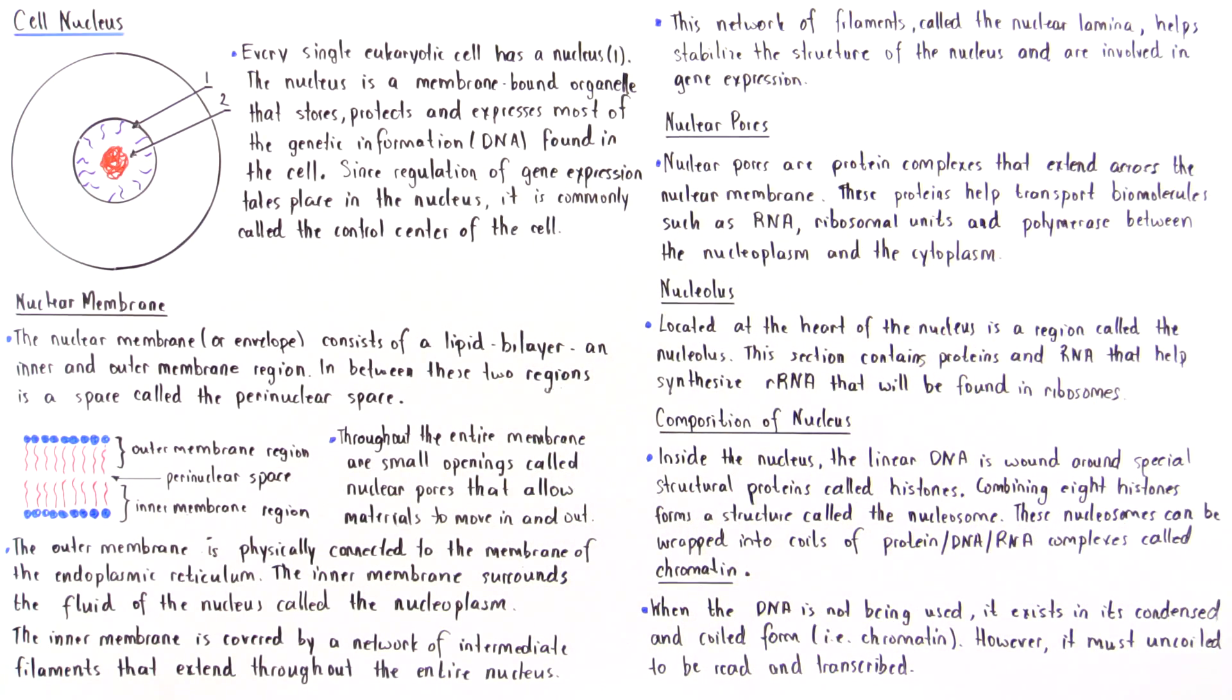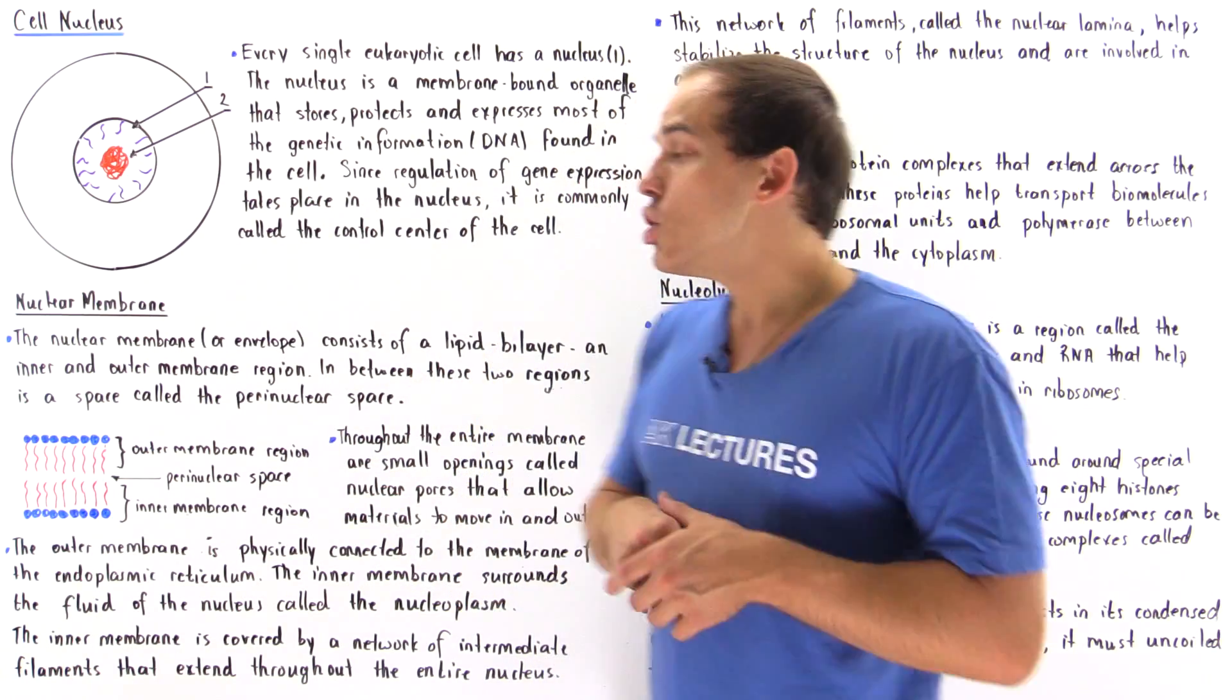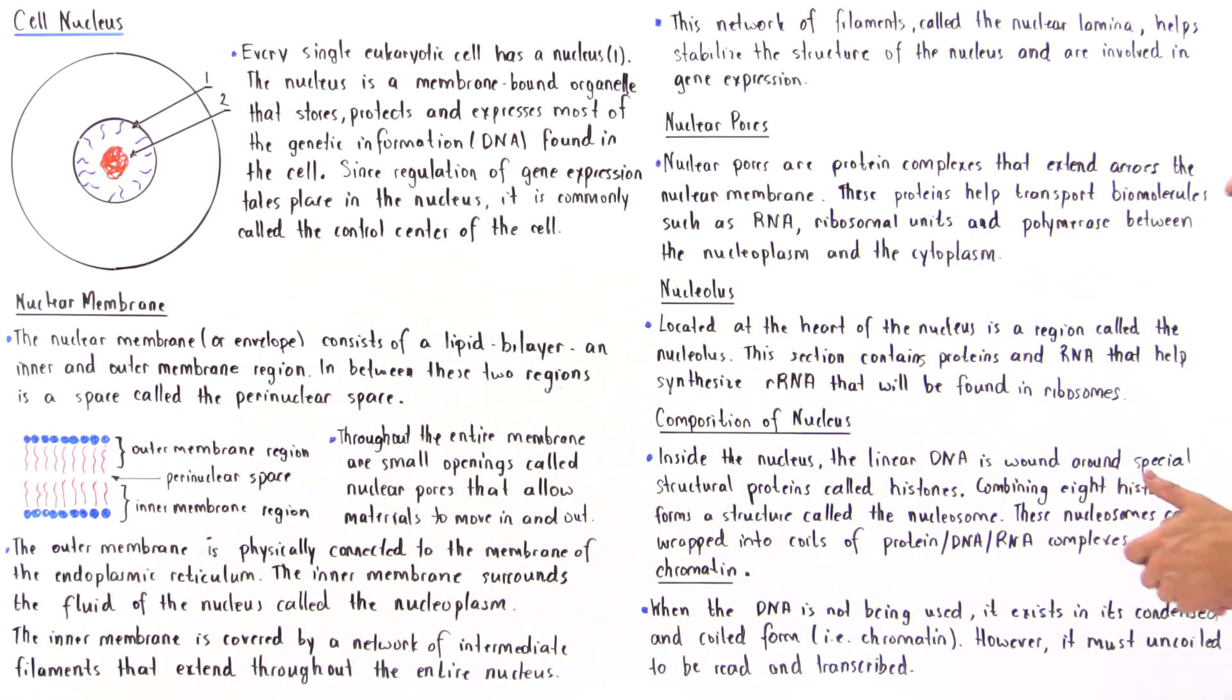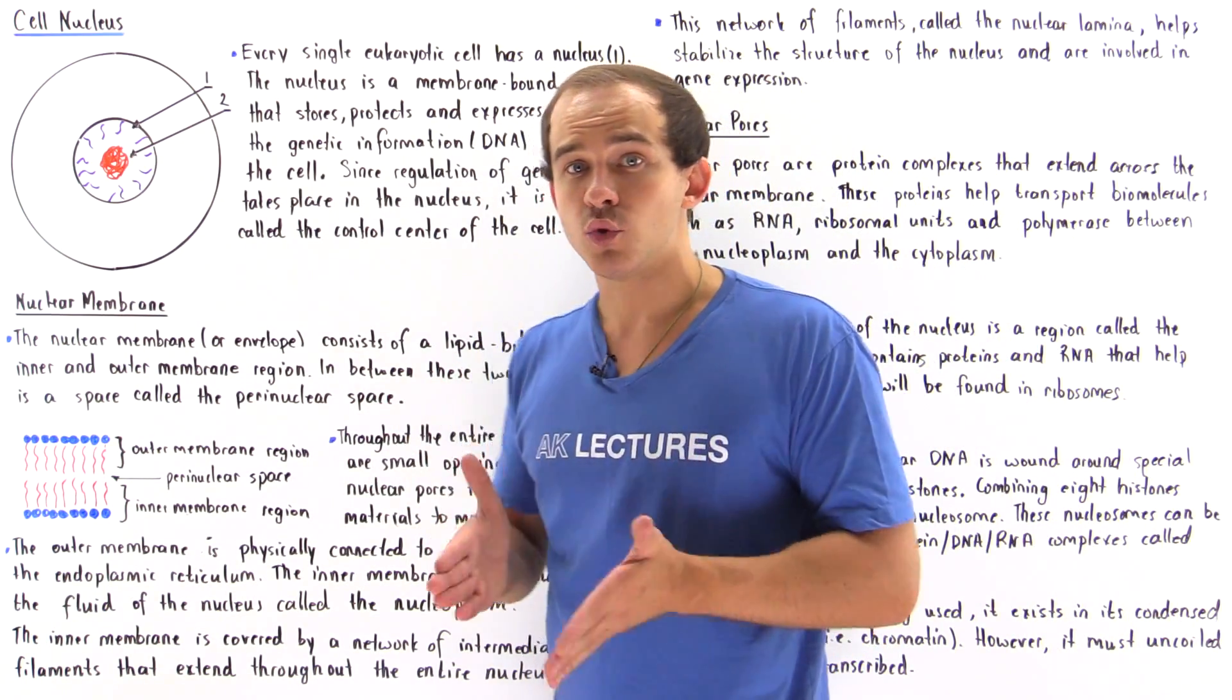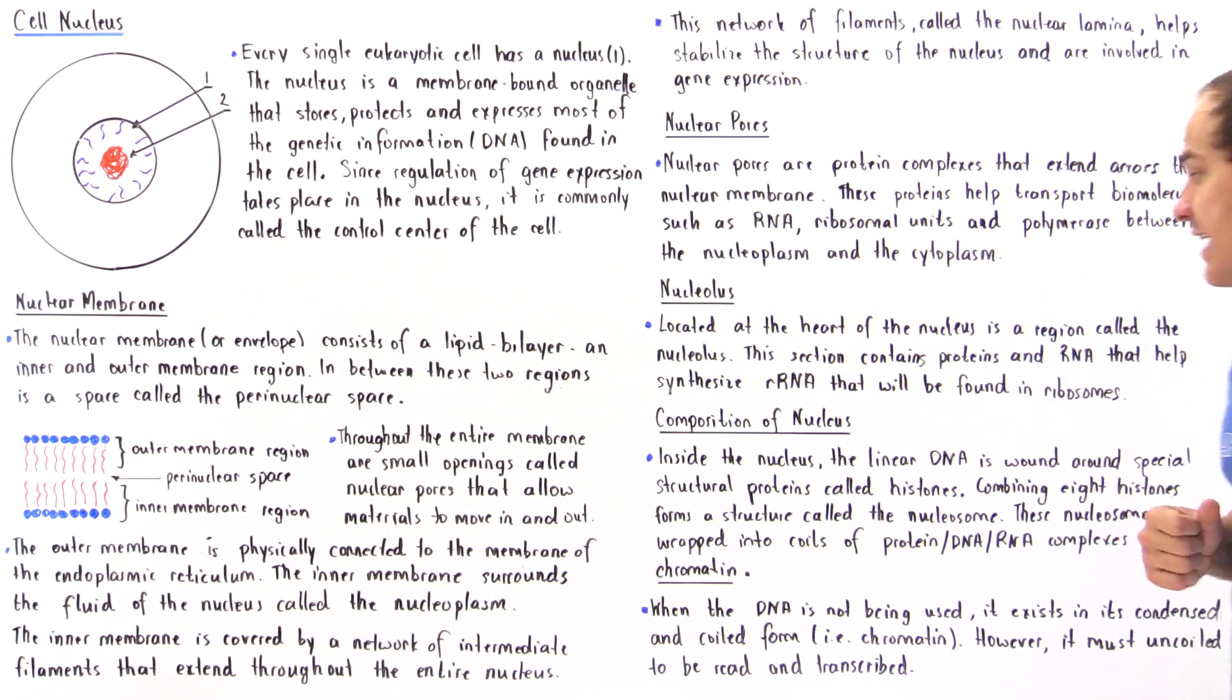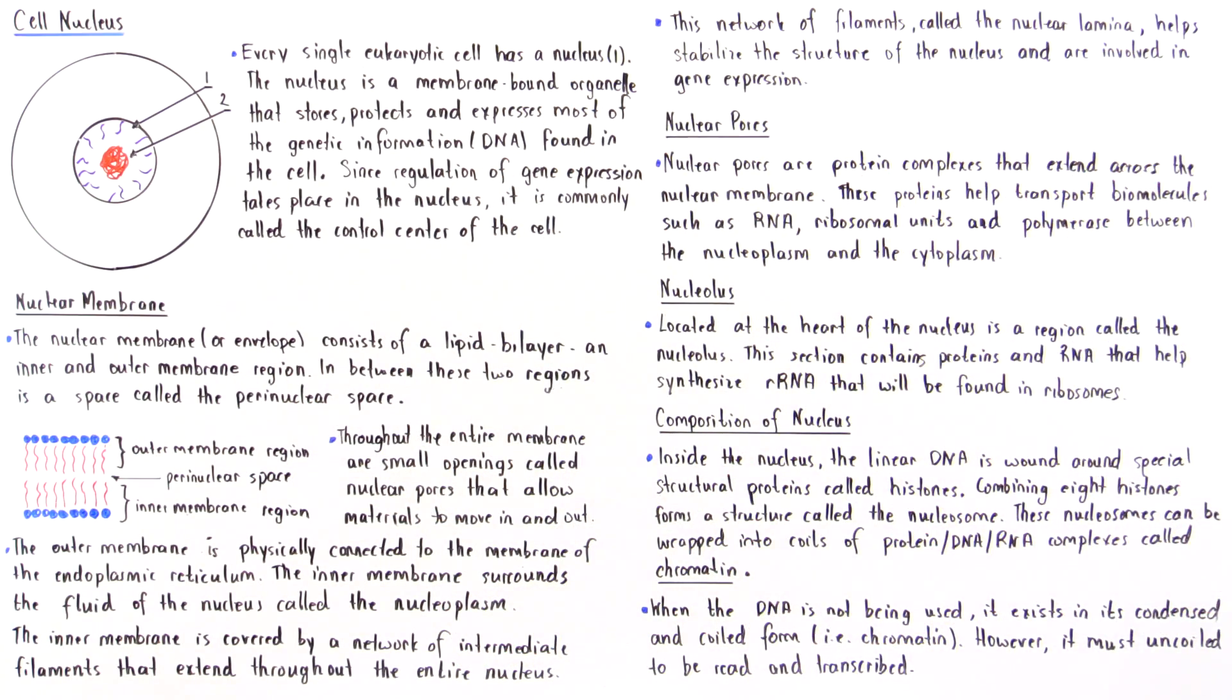Let's move on to a region of the nucleus known as the nucleolus. At the heart of any nucleus of any eukaryotic cell is a region known as the nucleolus, which takes up about 25% of space found inside that nucleus. This is a very important section because within this section we have RNA molecules and proteins that are responsible for synthesizing our ribosomal RNA that is needed to create ribosomes found within the endoplasmic reticulum as well as inside our cytosol of the cell.